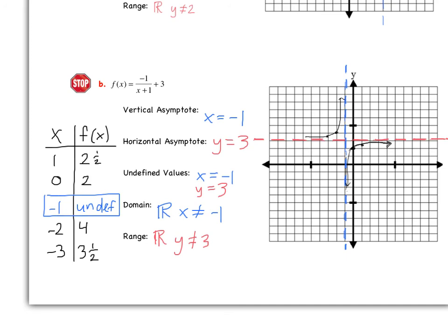Here's what I got for the second example: f(x) equals negative 1 over x plus 1, plus 3. The vertical asymptote is x equals negative 1, the horizontal asymptote is y equals 3. The undefined values match the asymptotes. Domain: x cannot equal negative 1. Range: y cannot equal 3. Check your table — be careful because we had that negative 1 in the numerator. If you have any questions with these graphs, bring them to class tomorrow. Have a great night. Bye.